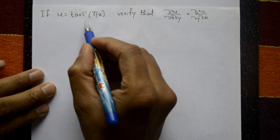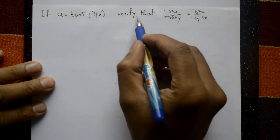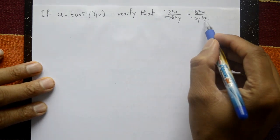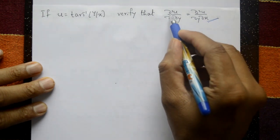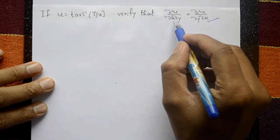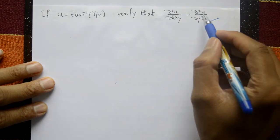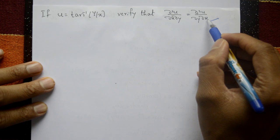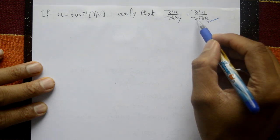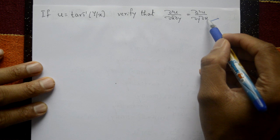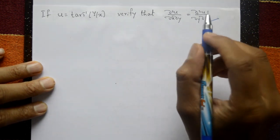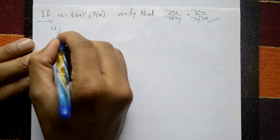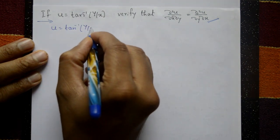If u is equal to tan inverse of y/x, verify that ∂²u/∂x∂y equals ∂²u/∂y∂x. Differentiate u first with respect to x and then with respect to y for the left hand side, and differentiate u with respect to y first and then with respect to x for the right hand side. Show that left hand side equals right hand side.